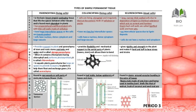Collenchyma provides strength because the thickening is at the corners of the cells. In contrast, sclerenchyma has no such flexible thickening — it provides rigidity instead. Sclerenchyma consists of long, narrow, thick-walled cells due to the deposition of lignin. Such cell walls are called lignified walls, which also have pits. On all four sides, there is a thick covering of lignin, a chemical substance that acts like cement.